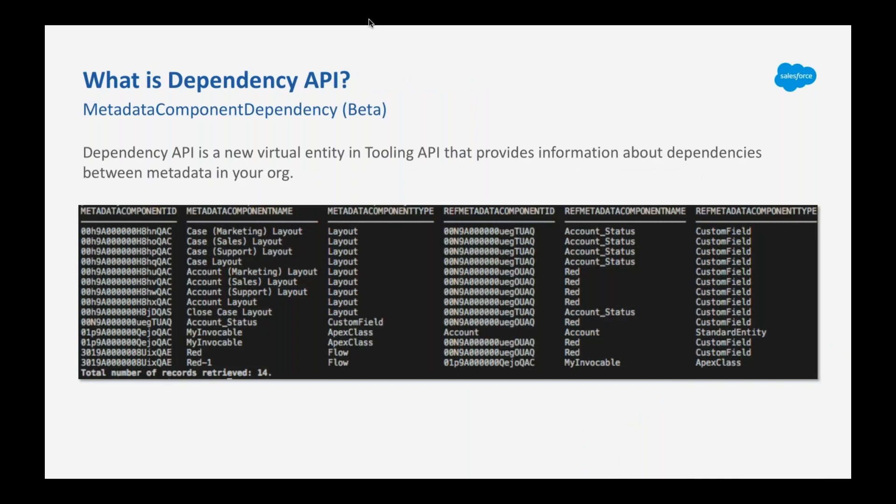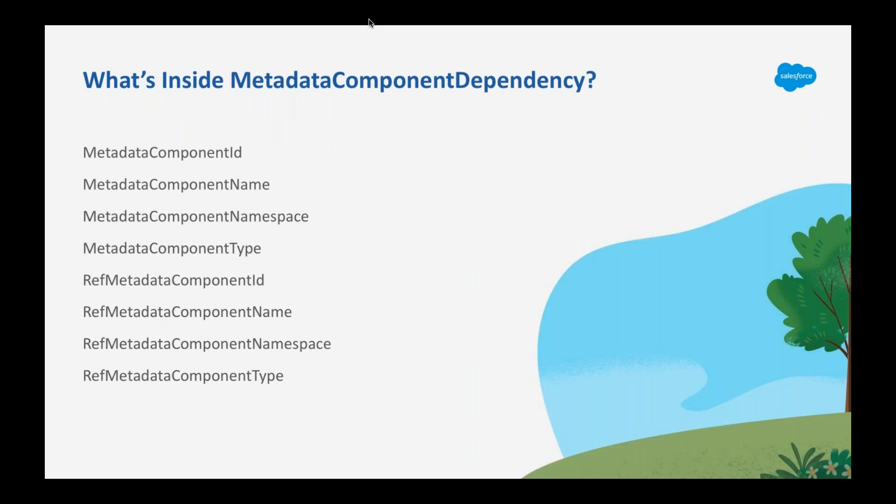So what is the Dependency API? It's technically just an extension of the Tooling API. It's a new virtual entity called MetadataComponentDependency that is available through the Tooling API, providing you a snapshot of almost all the dependencies within your org. It will tell you where a particular component is referenced, by what component, and provides eight different fields within that object. First, it will give you the metadata component IDs — so if a custom field is referenced by a page layout, you get a metadata component ID for the custom field and a reference metadata component ID for the page layout — as well as component names to make it easier to understand.